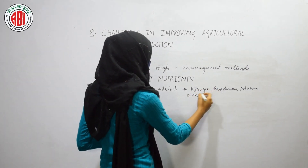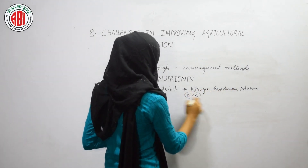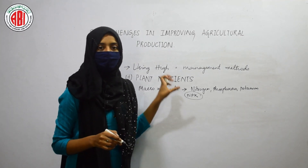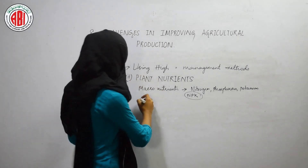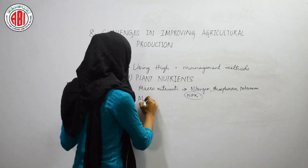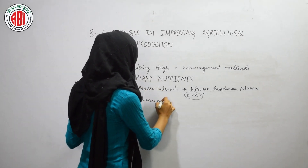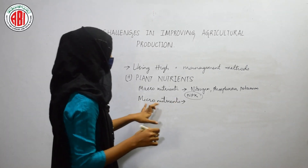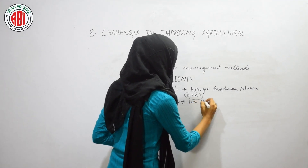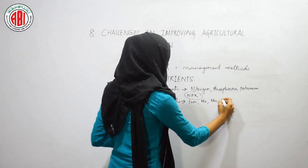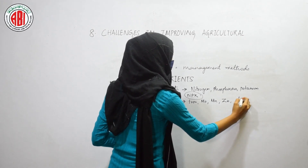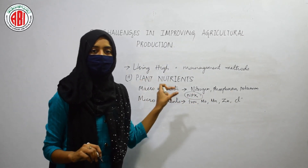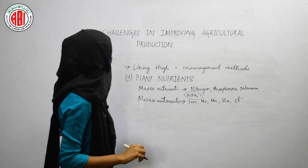Some nutrients are required in lesser amounts — based on the amount required, they are classified as macro and micronutrients. Micronutrients include iron, molybdenum, manganese, zinc, and chlorine. All such nutrient elements are termed micronutrients as they are required in lesser amounts by the plants.